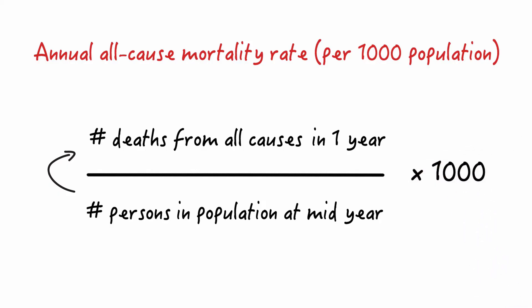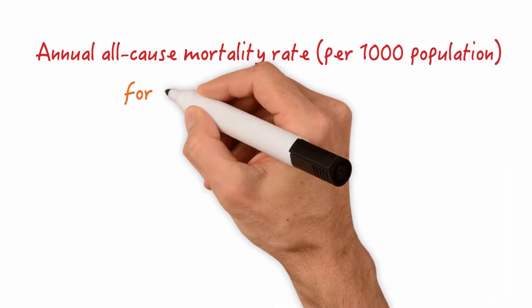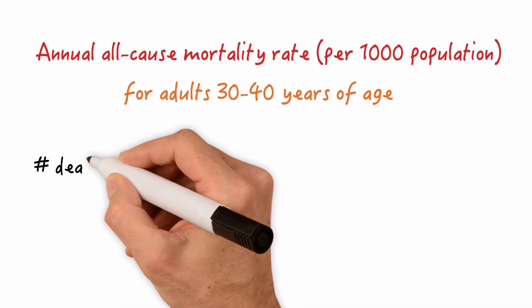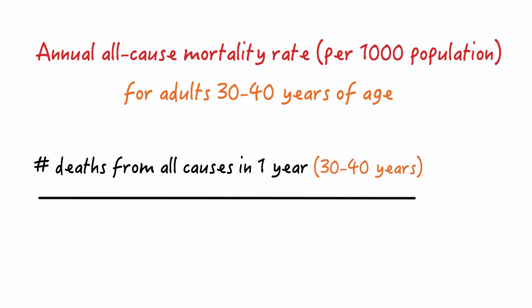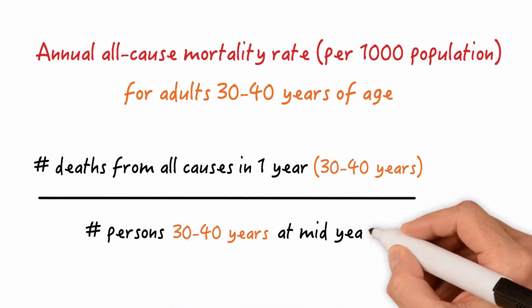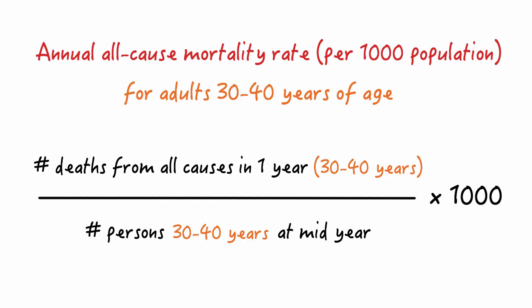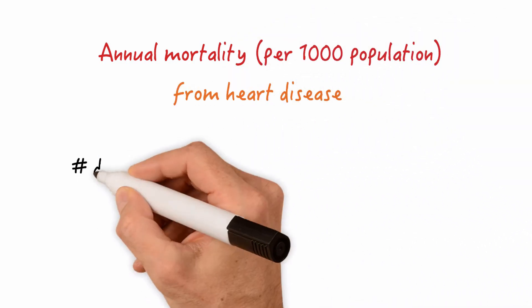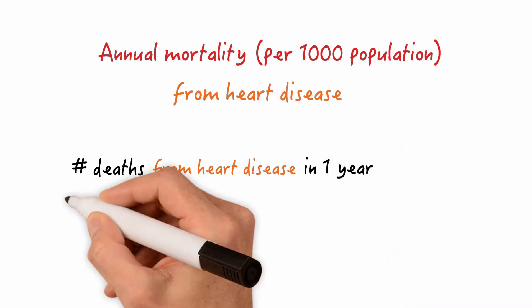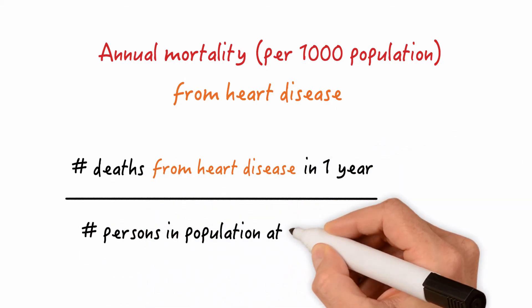We might not be interested in the entire population but in the mortality rate of a specific subgroup. For example, the annual all-cause mortality for adults aged 30 to 40 years: we take the number of deaths from all causes in one year in that age group and divide by the number of persons aged 30 to 40 at mid-year, then multiply by 1,000. Similarly, for a specific disease like heart disease, we take the number of deaths from heart disease in one year, divide by the number of persons in the population at mid-year, and multiply by 1,000.